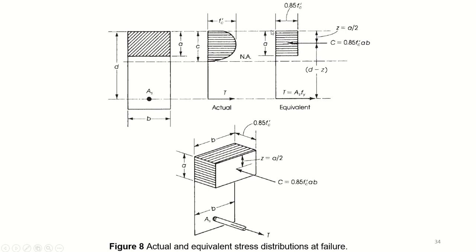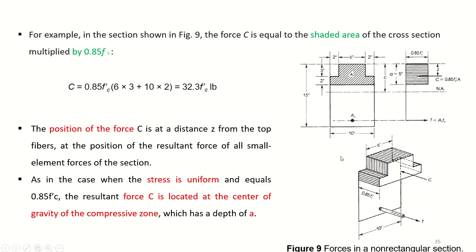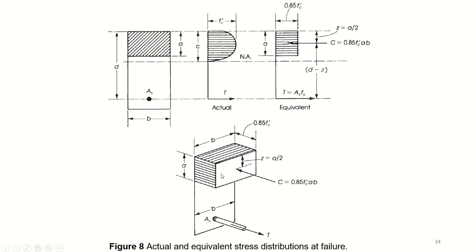Therefore, a scientist named Whitney derived that a rectangular block can replace this parabolic block, where the depth of the block is reduced to a small 'a' instead of 'c', and 'a' is a function of c: a equals beta-1 times c. The width of the block stress is 0.85 fc prime. Since the resultant of a rectangle is very easy to locate — at half the length from any side — you know the depth of the tension steel and the resultant of C, so the moment arm is easily known. The compression force C equals 0.85 fc prime times b times a. This is called the rectangular stress block and will be discussed in further detail in the next lecture.